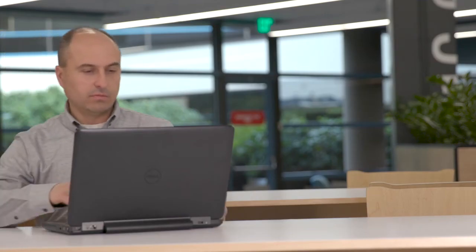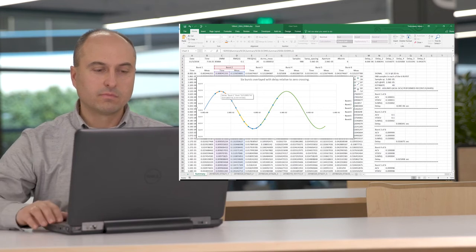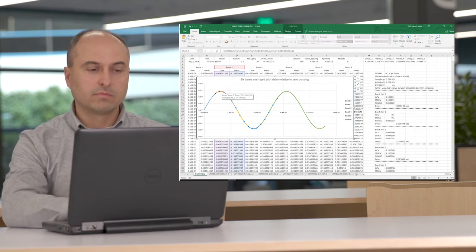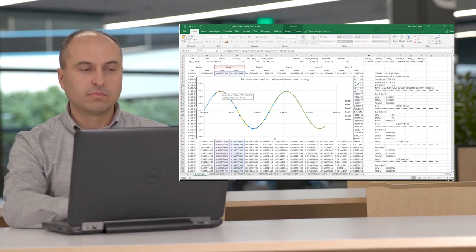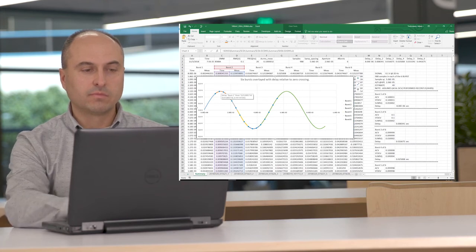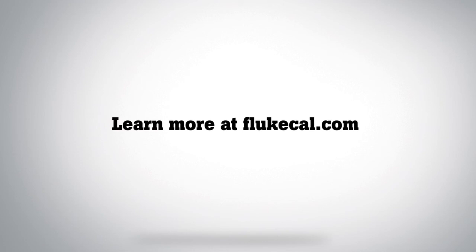The 8588A also enables you to copy the measurements to a CSV file via the USB port and transfer the data to a computer for further analysis in only a few seconds. Learn more at FlukeCal.com.